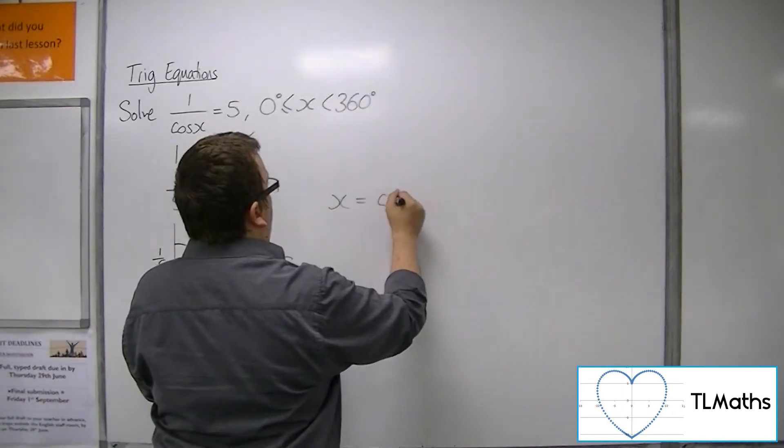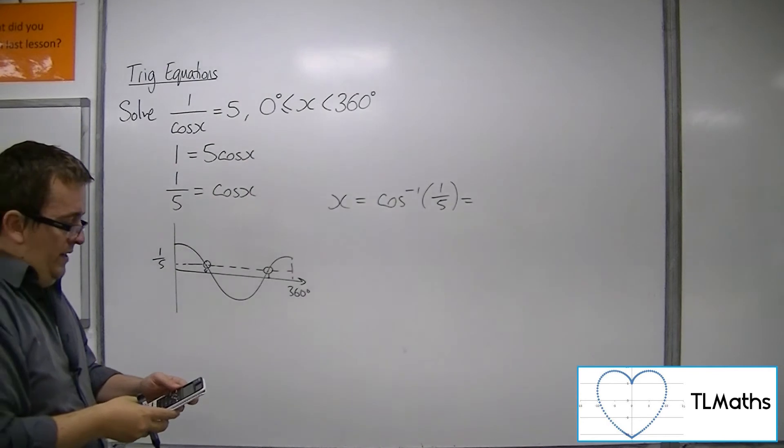The first solution is found by the inverse cosine of 1 fifth. Making sure you're in degrees, inverse cosine of 1 fifth is 78.5 degrees to 3 sig fig.